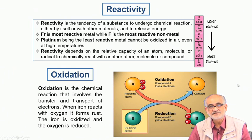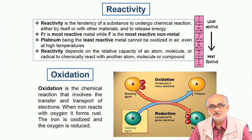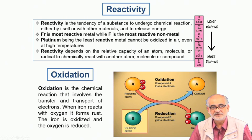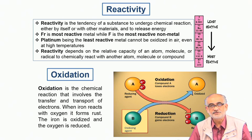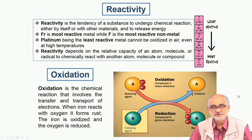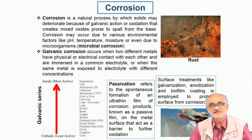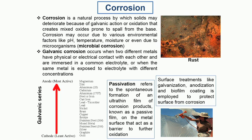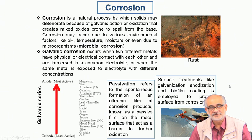This leads to gradual conversion of the solid into a different form, which is mostly undesirable and we need to prevent it. In order to prevent it, we should first realize how this degradation is taking place. Such degradation, as we saw in the case of oxidation, is essentially a chemical degradation process. A similar thing can happen in terms of corrosion, which is what I was explaining in terms of rusting.